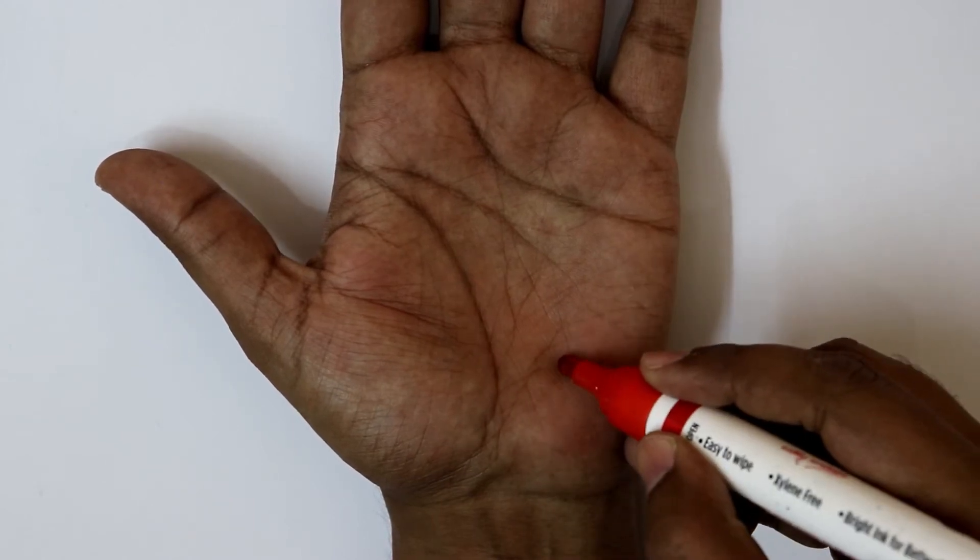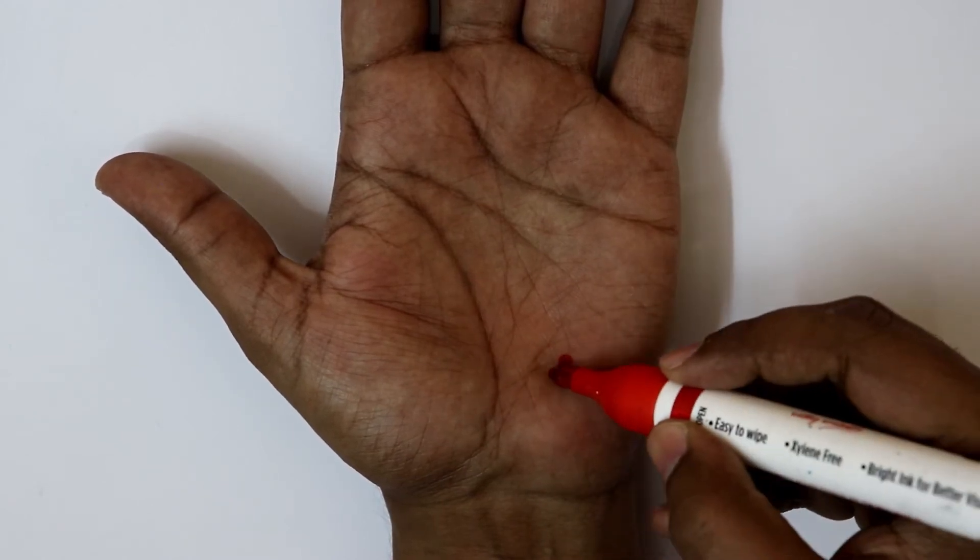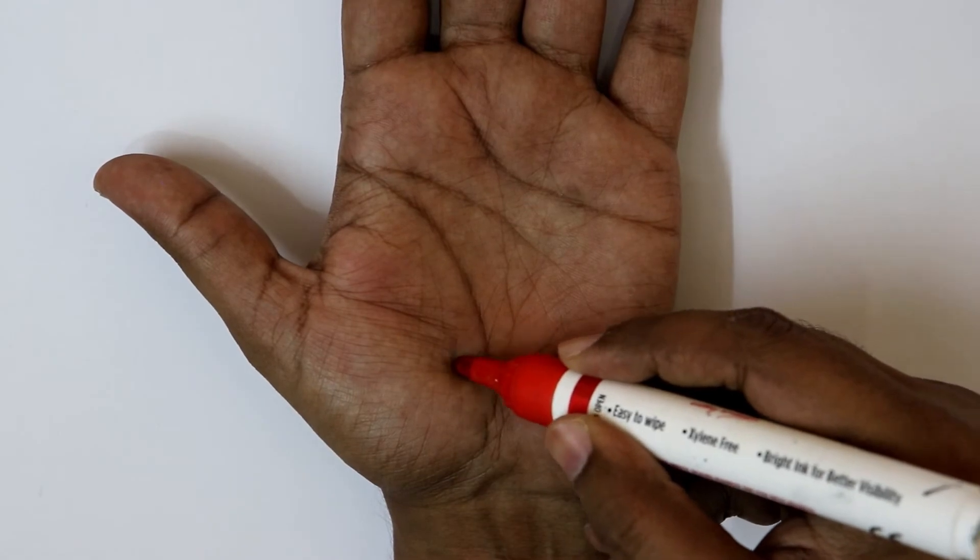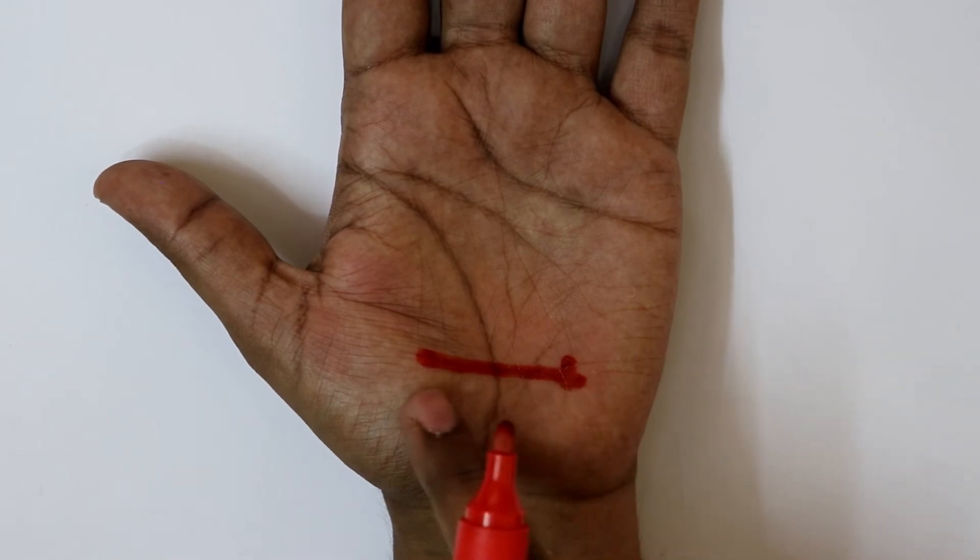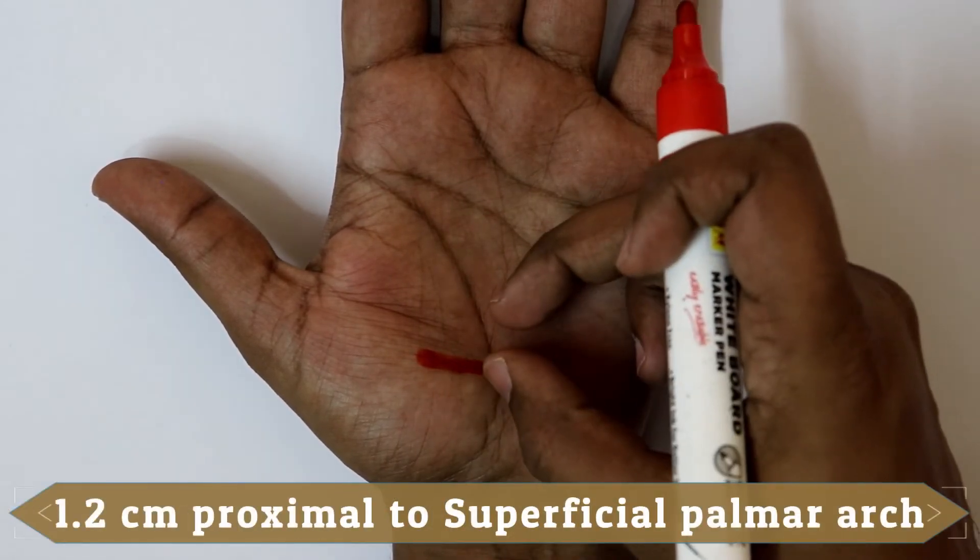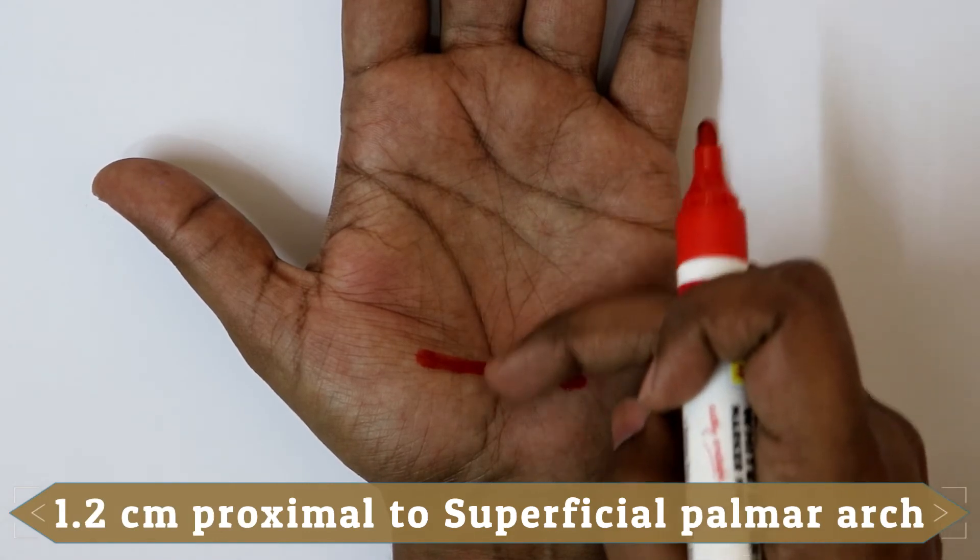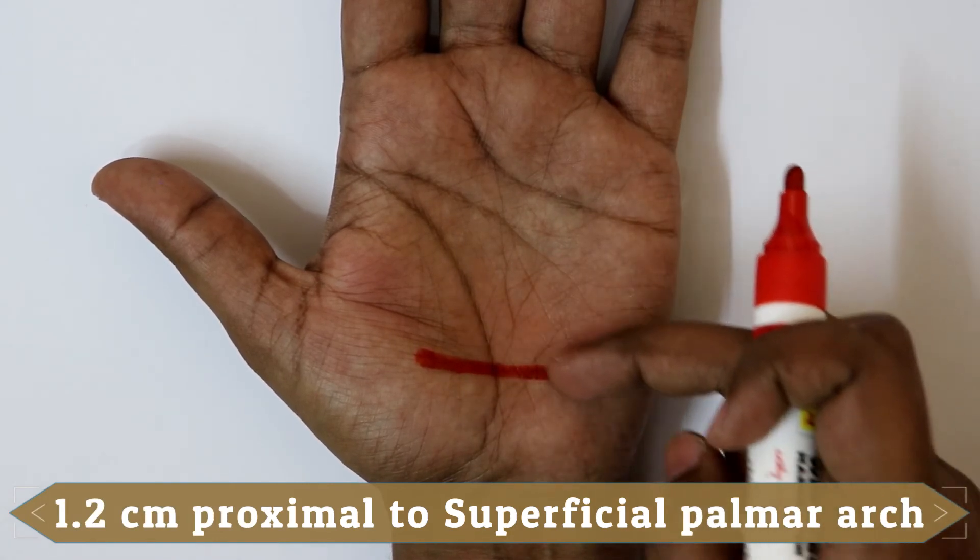We will take a point just distal to the hook of hamate and draw a horizontal line 4 cm long towards the radial side of the palm. So this marks the deep palmar arch, which lies approximately 1.2 cm proximal to the superficial palmar arch.